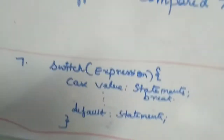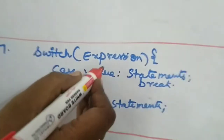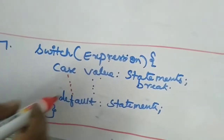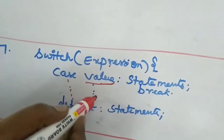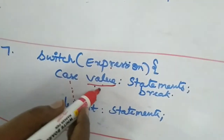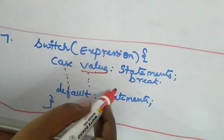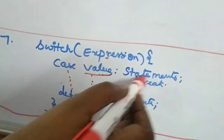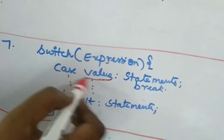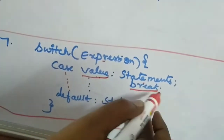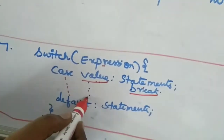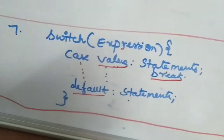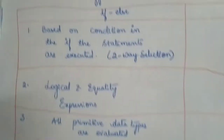Coming to the syntax of switch, I'll have a switch and then an expression. This expression is matched with the values in the cases. I can have any number of cases here, and the expression will be matched with these values. If any one of the values is matched, then the consecutive statement of that particular case will be executed, followed by a break. If none of the cases are matched, then the default case will be executed. This is the syntax of switch.